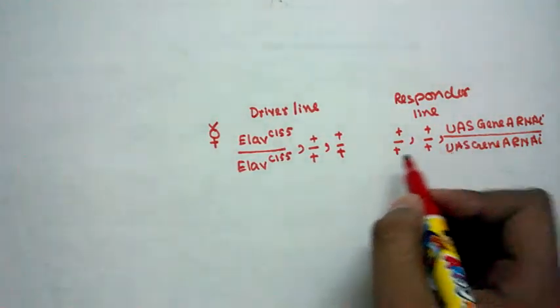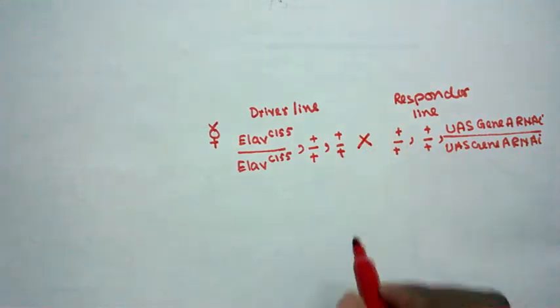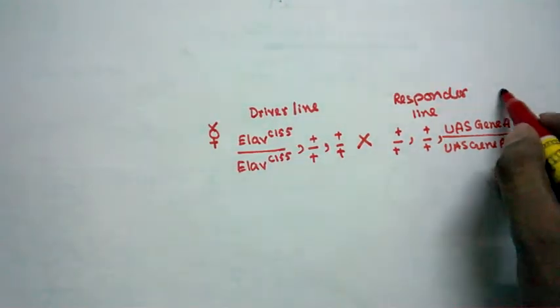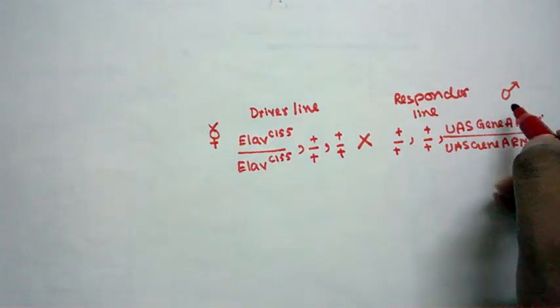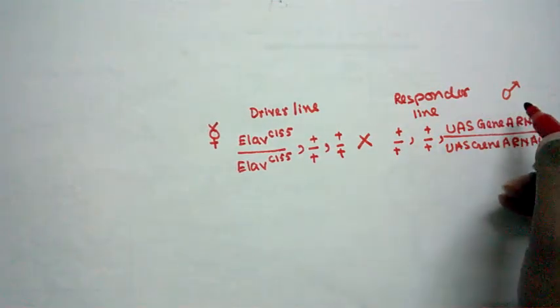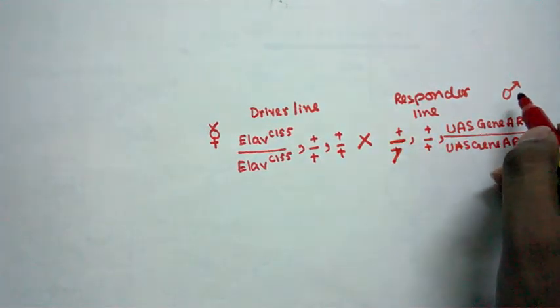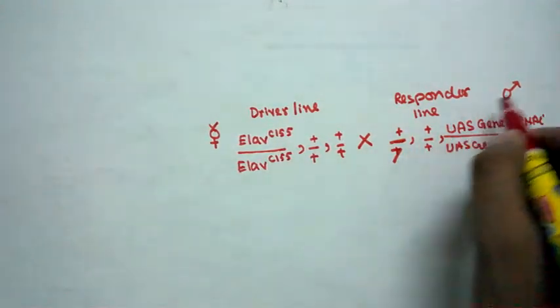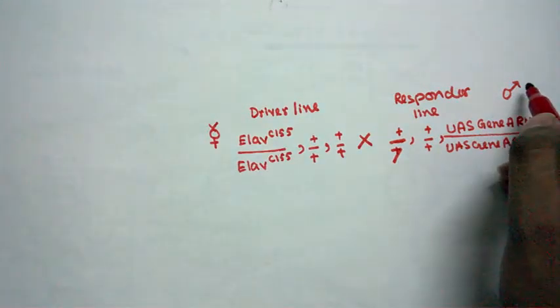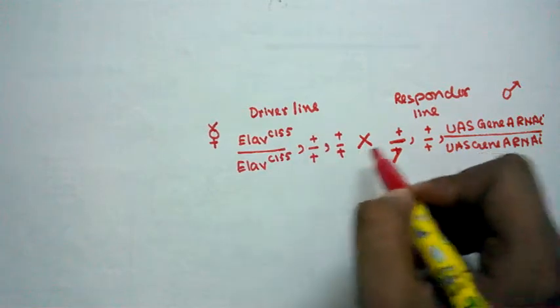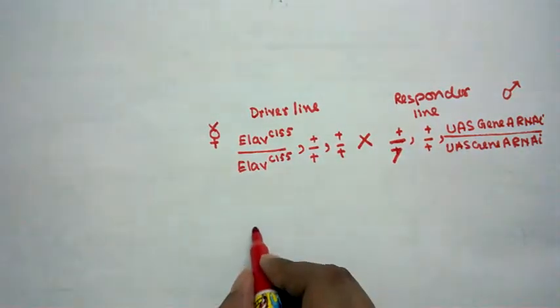So this is our responder. Now we would cross between these two. We would take the females from driver line, we would take some males from the responder line. We can do the reverse also, but for instance, we have taken the male from the responder line. It's a Y chromosome. So we have taken the males from the responder line, virgin females from the driver line. Now we cross between the two.